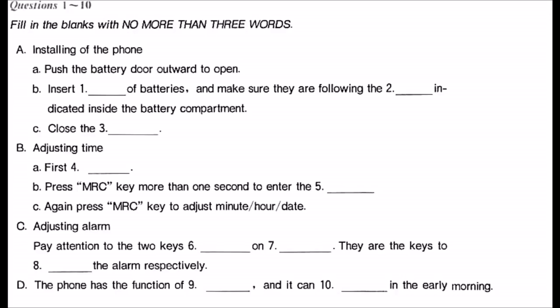First, push the battery door outward to open and then insert two batteries, size AAA. Make sure they are following the polarity directions indicated inside the battery compartment. Finally, close the battery door. This is the first step.